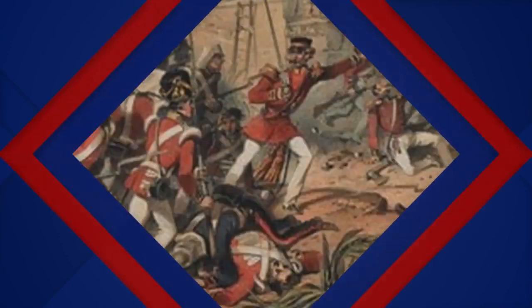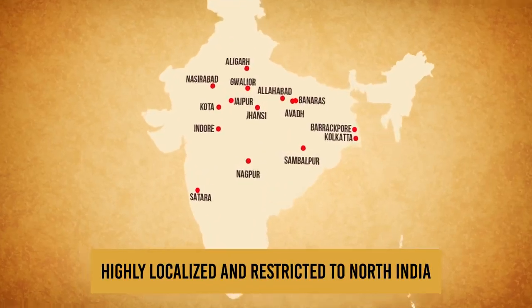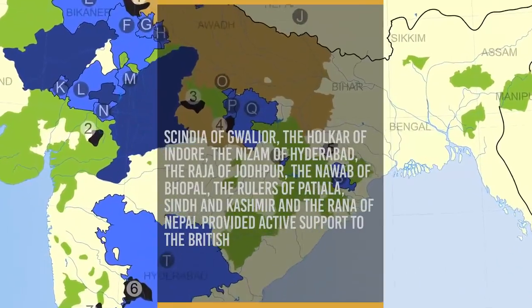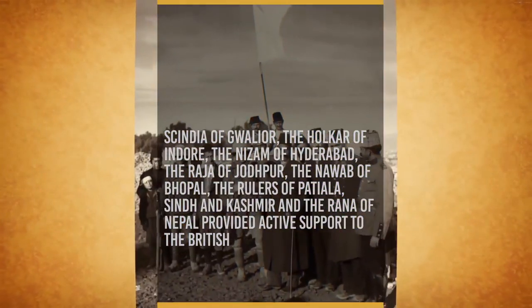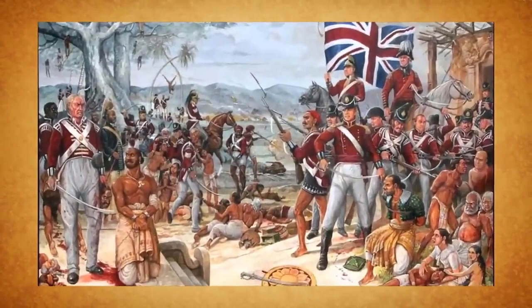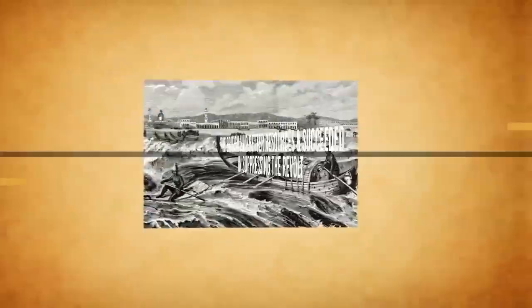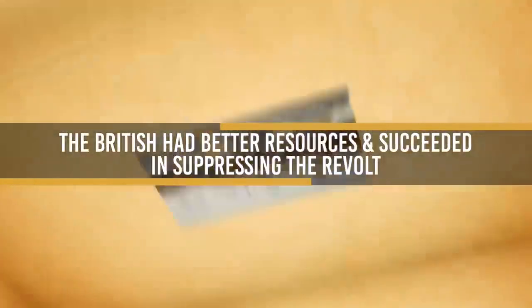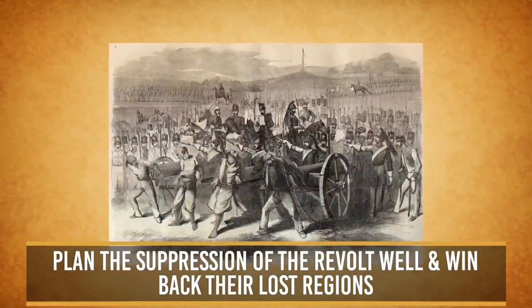The Causes of the Failure: The revolt was highly localized and restricted to North India. Regions beyond the river Narmada in the south remained largely undisturbed. Scindia of Gwalior, the Holkar of Indore, the Nizam of Hyderabad, the Raja of Jodhpur, the Nawab of Bhopal, the rulers of Patiala, Sindh and Kashmir, and the Rana of Nepal provided active support to the British. The revolt was poorly organized and lacked coordinated planning amongst the leaders. The rebels lacked a common cause and had different goals. The British had better resources, modern means of transport and communications, and capable generals such as Havelock, Outram, and Lawrence, who successfully suppressed the revolt.